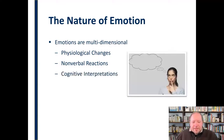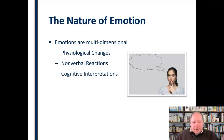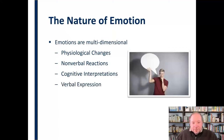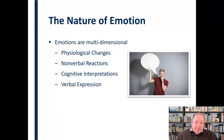We also have cognitive interpretations related to emotion — in other words, how we think about those emotions, how we interpret them in our own mind, and how we assign value and meaning to them. Those cognitive interpretations are an important dimension of emotion as well. And then finally, our verbal expression: we express ourselves verbally when we experience an emotion. Are we doing it as effectively as possible? That's what we mean when we say emotions are multidimensional — they affect us physically, psychologically, nonverbally, and verbally.